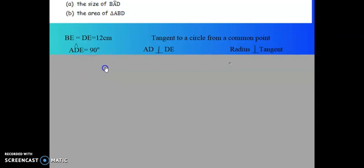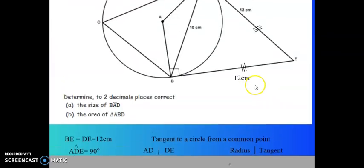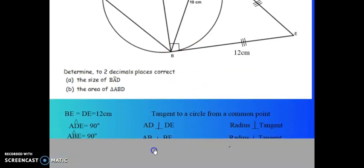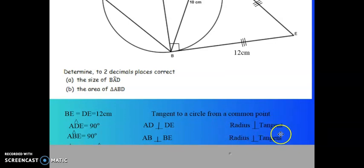Then I say there that angle ADE is 90 degrees. Meaning AD is perpendicular to DE because a radius meets a tangent at 90 degrees. But AB is also a radius and BE is a tangent. So they will also meet at 90 degrees. And I list it down and I say my reason it's a radius meets a tangent at 90 degrees.